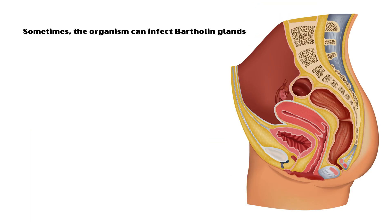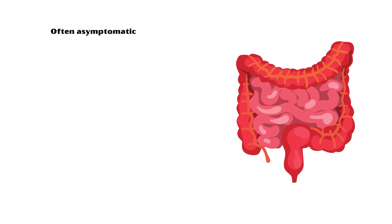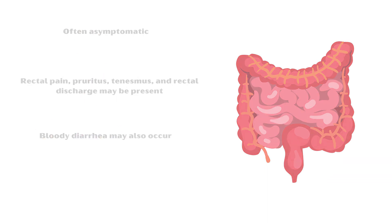Sometimes the organism can infect the Bartholin glands, which could be asymptomatic or may cause perilabial pain, edema, and tenderness. Rectal infection is often asymptomatic, but rectal pain, pruritus, tenesmus, and rectal discharge may be present if the rectal mucosa is infected.